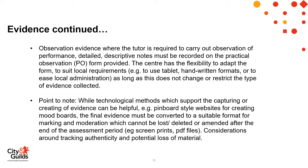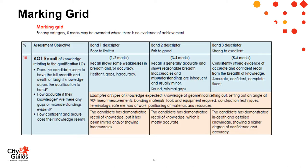Marking takes place when the task is complete using the candidate record forms. Ensure you have a good understanding of the holistic approach to marking models. The marking grid gives you a clear explanation of AO1, which is worth six marks. The total marks allocated for the assignment is 60. The balance range for AO1 is from poor — 1 to 2, to fair — 3 to 4, then strong — 5 to 6.